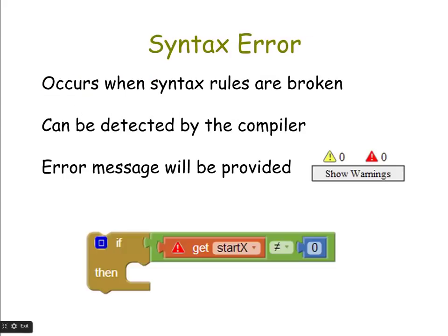A syntax error occurs when those syntax rules are broken, and it can be detected by the compiler for that programming language. Usually an error message will be provided. In App Inventor, in the blocks window, you should see in the lower left-hand corner a little area with the show warnings button. You'll also see a yellow triangle and a red triangle with numbers beside them, indicating how many warnings and errors you have in your program.